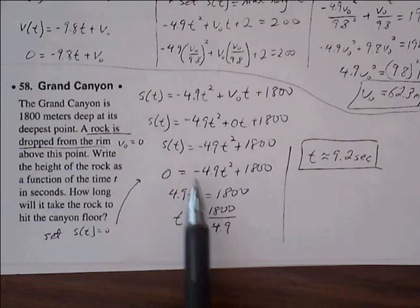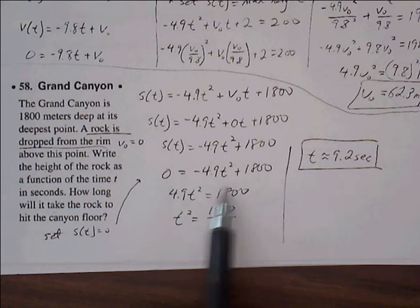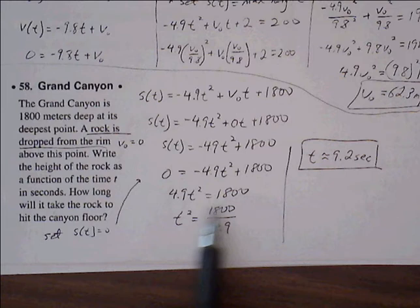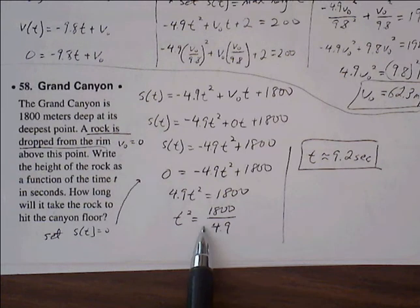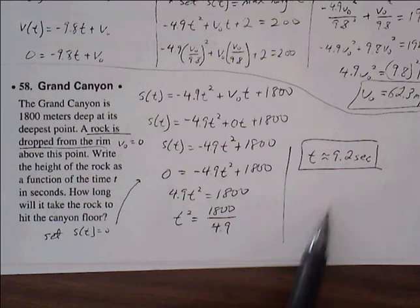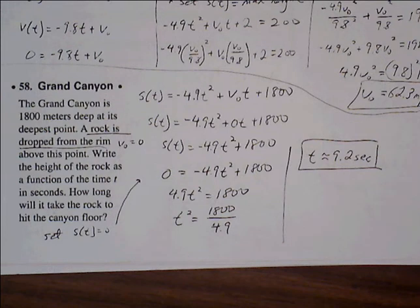To solve for t, we can subtract 1,800 from both sides, divide both sides by negative 1, divide both sides by 4.9, and then take the square root. It'll take 19.2 seconds for the rock to hit the canyon floor.